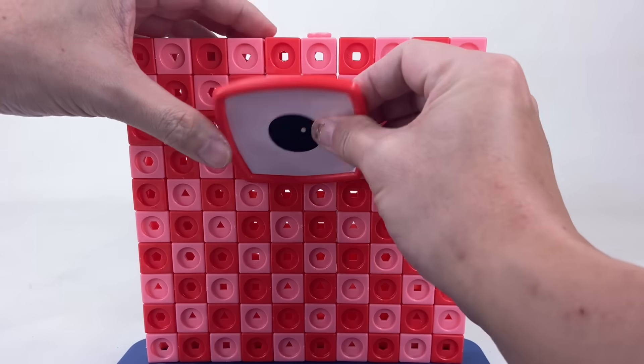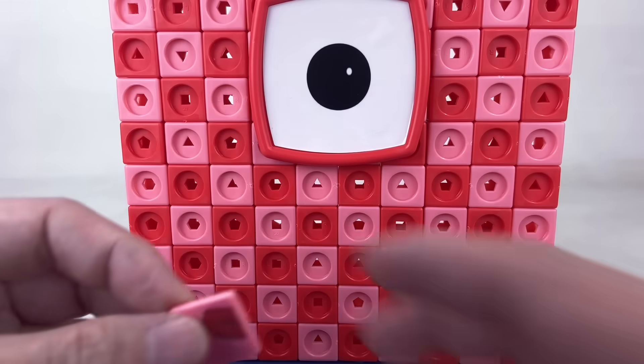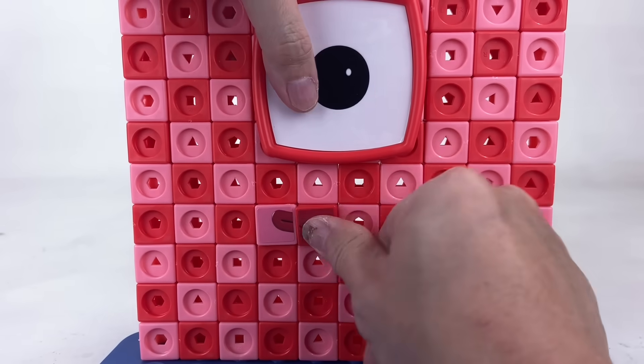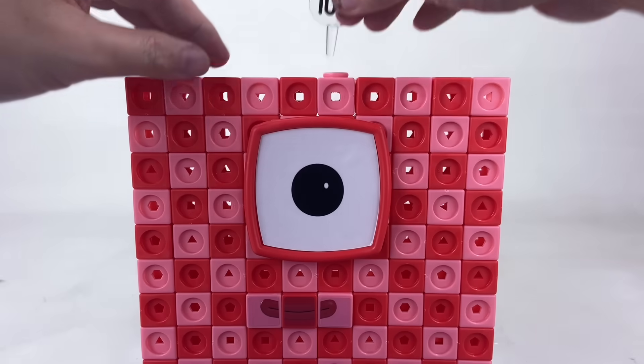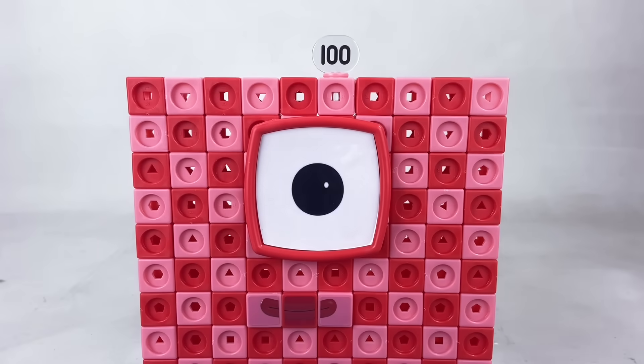She has 1 giant eye and her mouth is made up of 3 blocks. Her numberling is made up of 1 and 2 zeros to make 100.